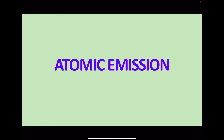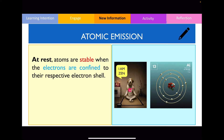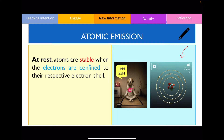To understand what happens in this process, we must firstly explain what happens inside of the chemicals before we actually heat and light them up. The atoms inside of a firework are stable because the electrons are confined to their respective electron shell. What that essentially means is that the two electrons found in the first shell will stay in the first shell and won't move at all. This applies to the electrons found in the second and third shell as well.